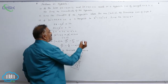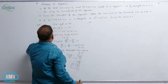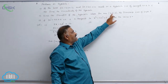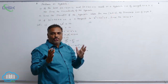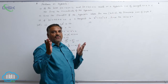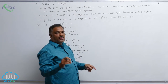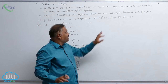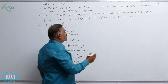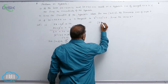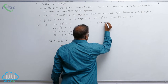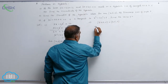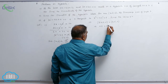Coming to the second question: find the equation of the hyperbola whose foci are (±5, 0). For the standard hyperbola, the foci are given by (±ae, 0). Matching this format, we write ±ae equal to ±5, which implies ae equal to 5.